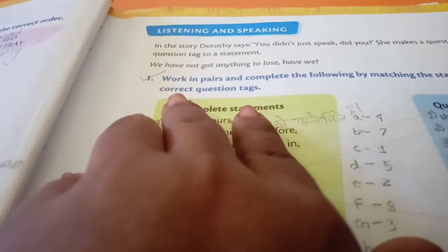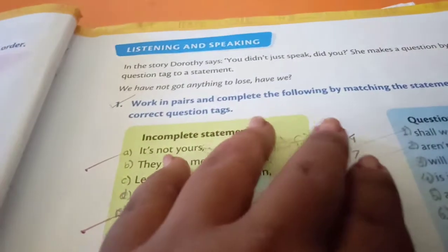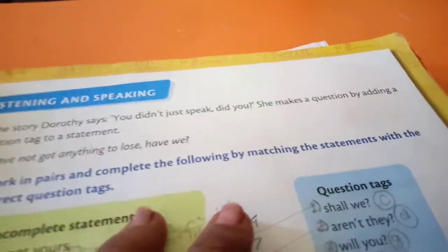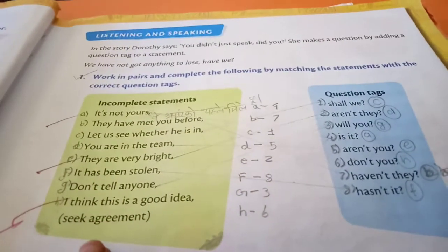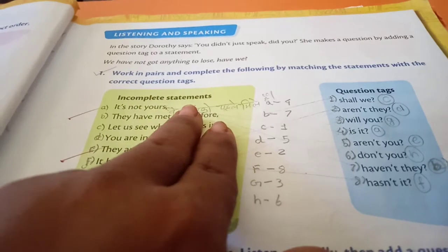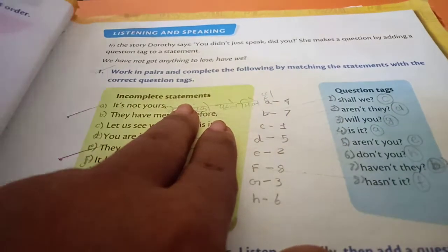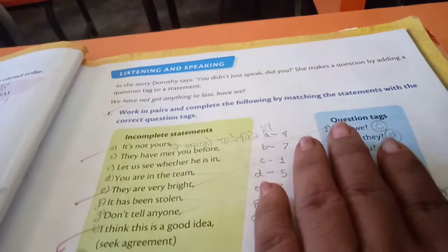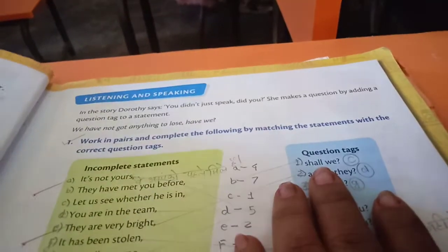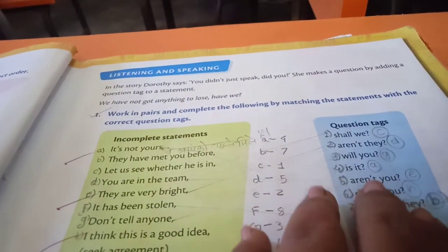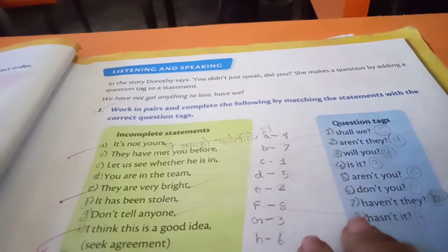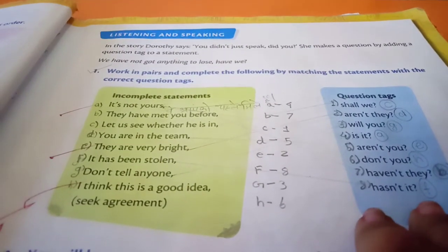Question number 1: work in pairs and complete the following by matching the statements with the correct question tags. Here some sentences are given. These are the incomplete statements, meaning the answers to the questions. See the question tags: shall we, aren't they, will you, is it, aren't you, haven't they, hasn't it. These are the question tags.